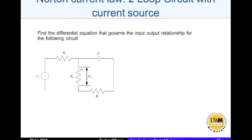We take the output across this resistor R2 here, right in between this is V0, our output. So we need a differential equation that relates II to V0. Now there are two loops here. You might think that we can apply Kirchhoff's voltage law, but you can't do that in this loop directly. So let's apply Norton's current law to solve this problem.